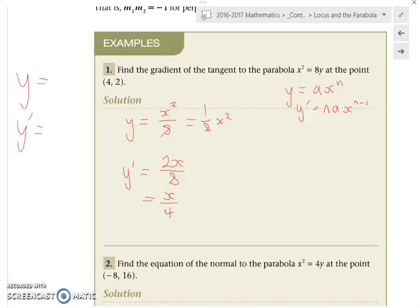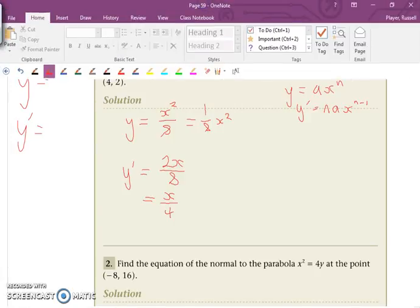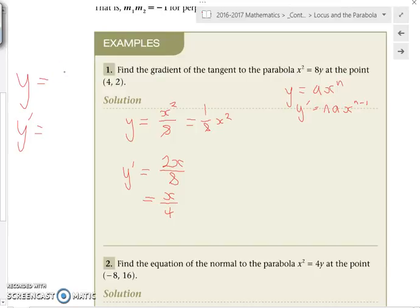Okay. So that gives me the gradient. But the question is asking for the gradient at that point. So we now have the gradient at any point. That's the equation of the gradient of the tangent.